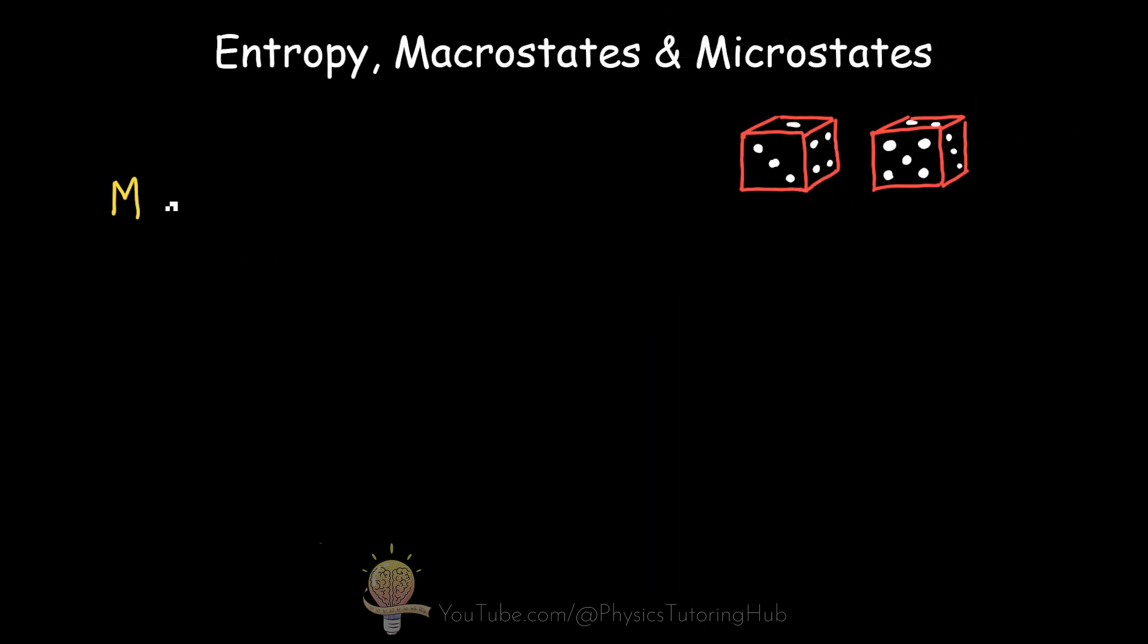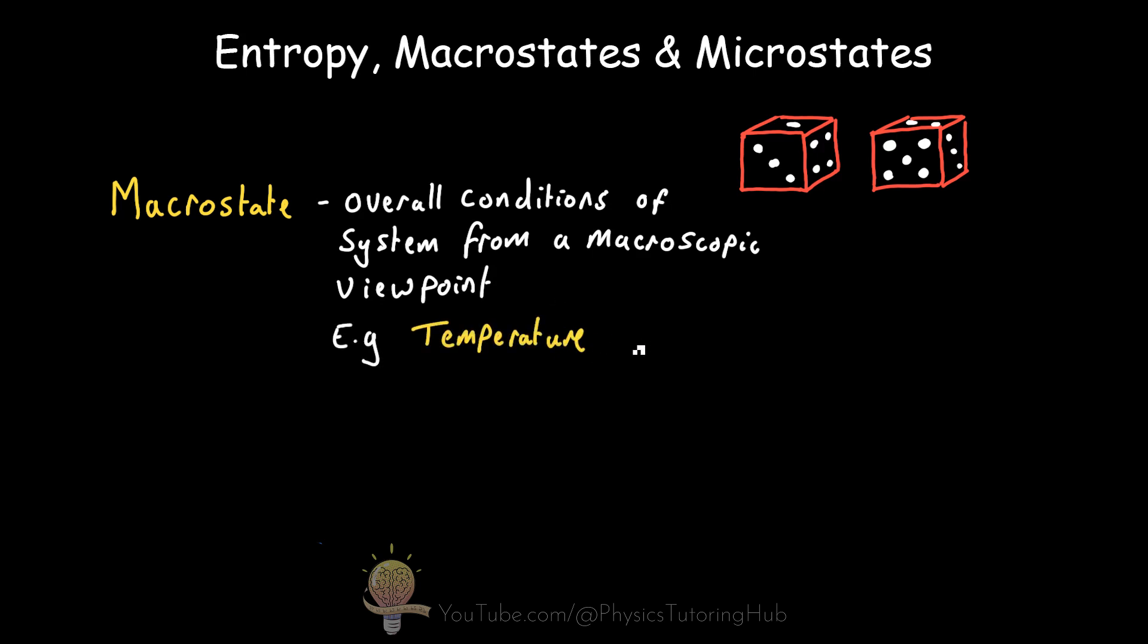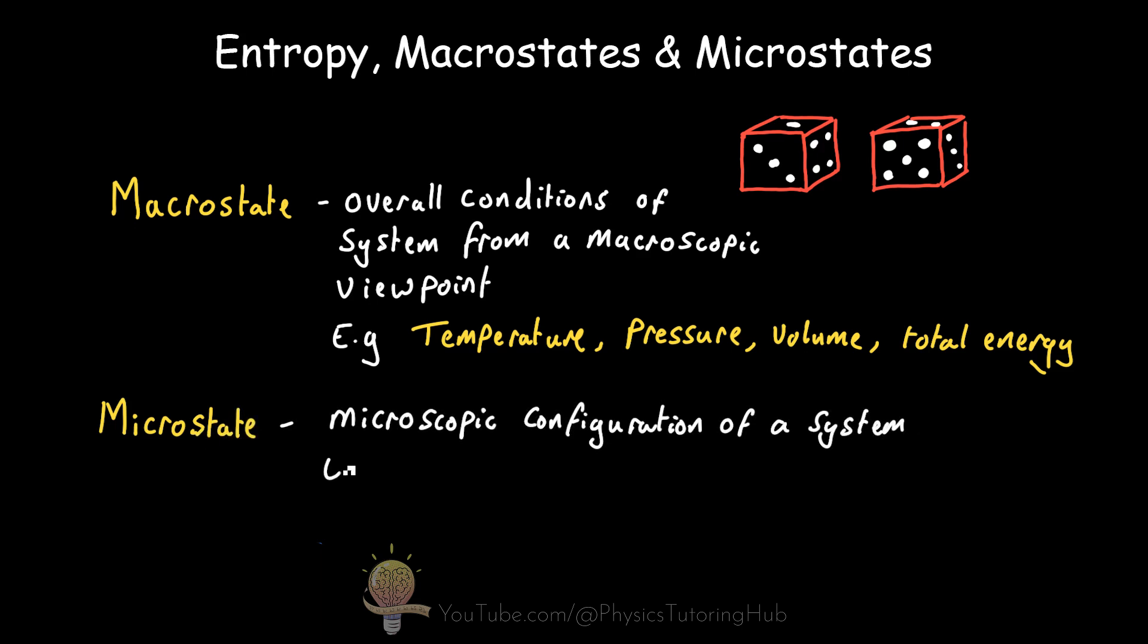What are macrostates and microstates? A macrostate is a description of the overall conditions of a system from a macroscopic viewpoint. For example, every system has a specific temperature, pressure, volume, and total energy. These properties describe the system as a whole without us needing to worry about the state of the individual particles that make up this system.